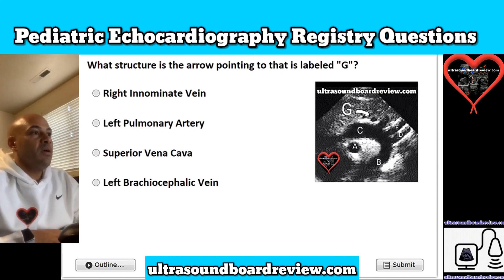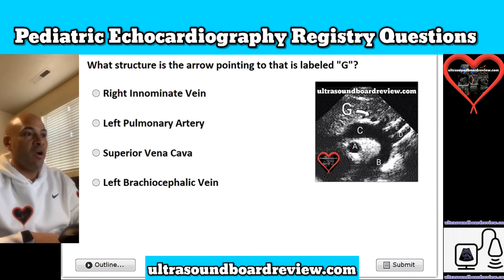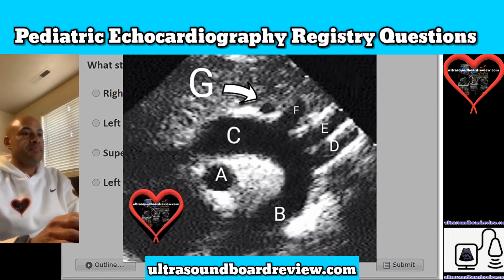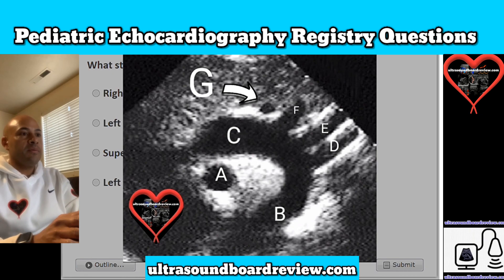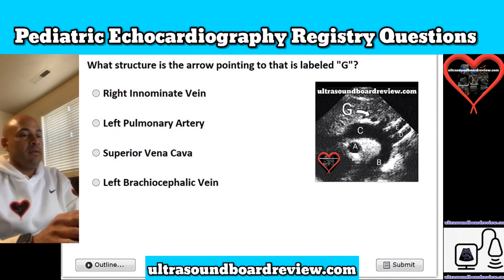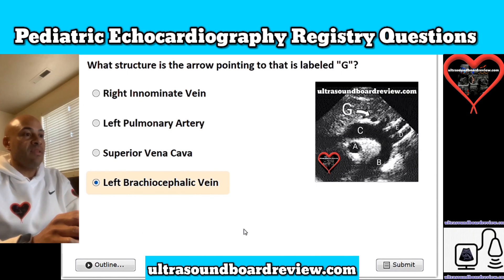Question 17. What structure is the arrow pointing to that is labeled G? Is it A, right innominate vein; B, left pulmonary artery; C, superior vena cava; or D, left brachiocephalic vein? The answer is D, left brachiocephalic vein, also known as the left innominate vein.